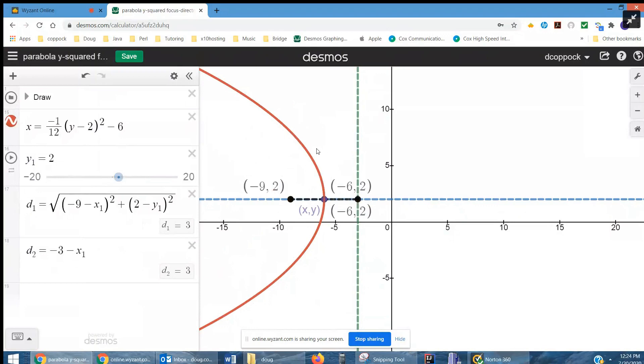So now you've got h and k, and all you need is p. And p is the distance from the vertex to the focus, 3, or the distance from the vertex to the directrix, also 3. We could say it's a directed distance. I just like to think if the parabola is opening away from the directrix to the left, that p has to be negative. So this is the -1 over 4p right there.